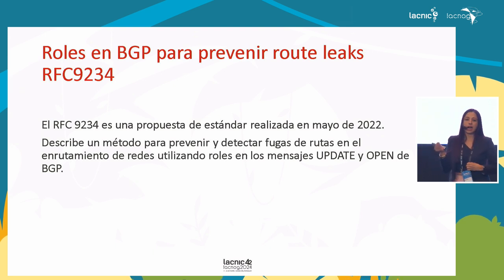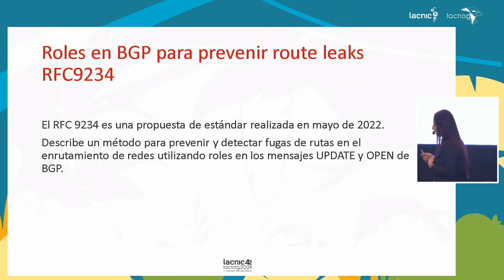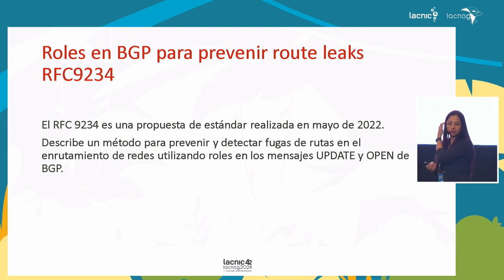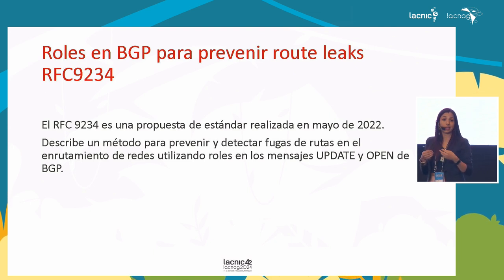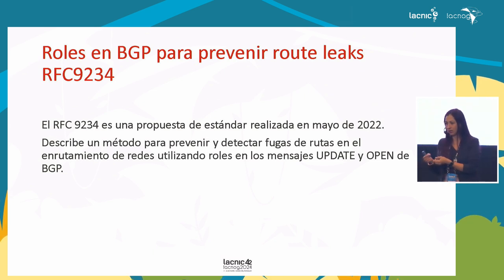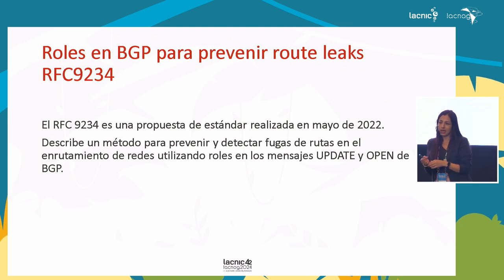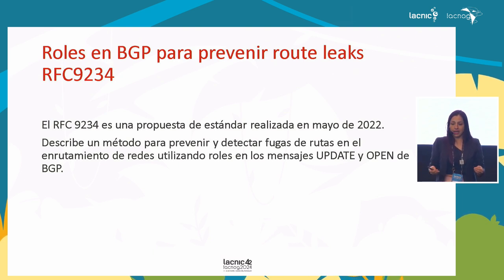Thanks to that typification of different route leak types, they started discussing issues that arise despite using IRR objects or RPKI objects. So RFC 9234 was created. Both RFC 7908 and RFC 9234 have already been approved and are in production. The remaining three topics—ASPA, signed prefix lists, and RSC—are still draft RFCs under discussion. RFC 9234 was standardized in 2022.